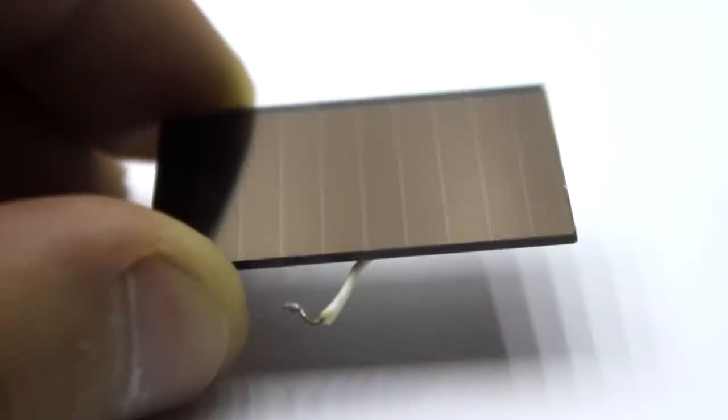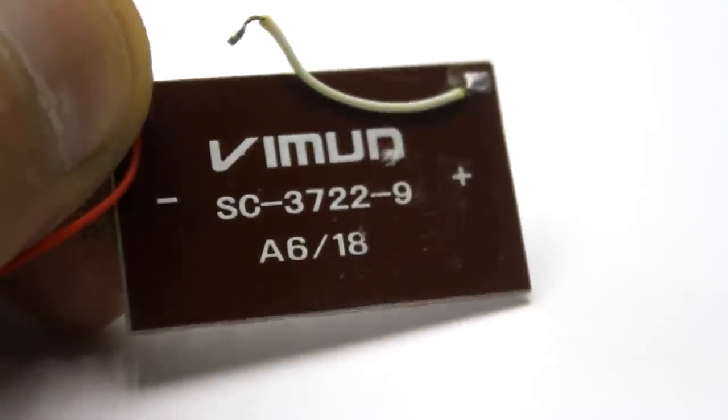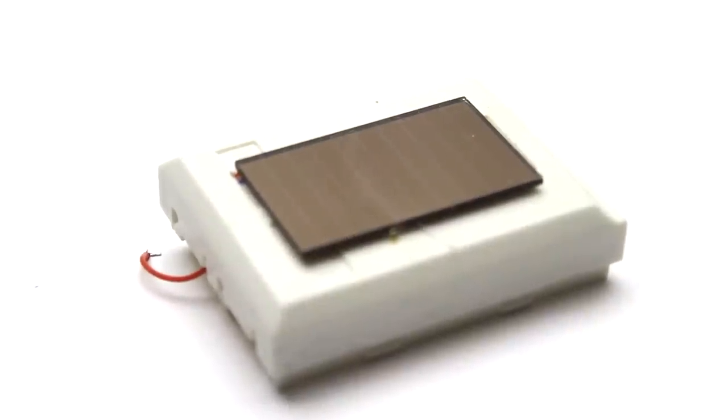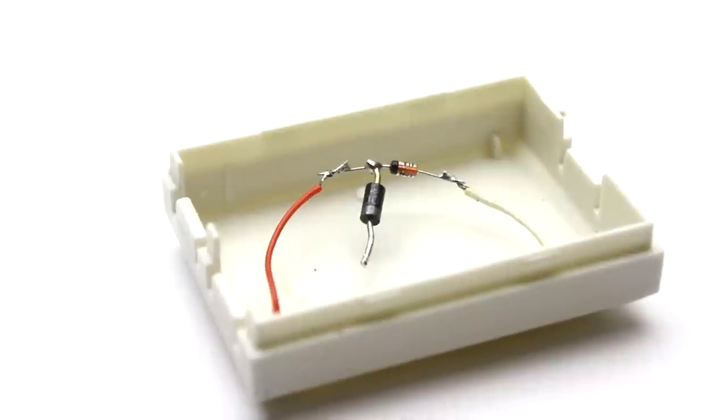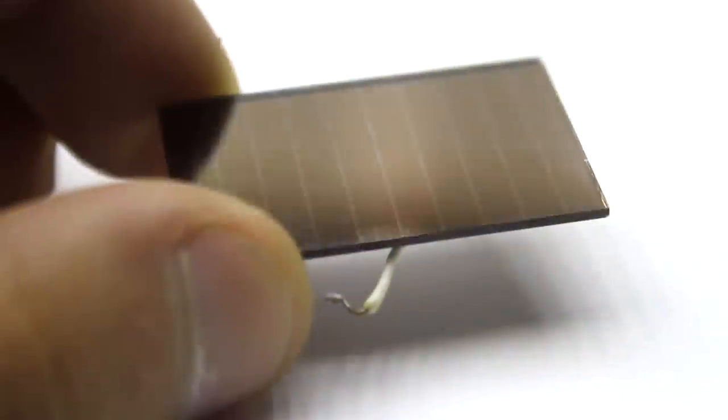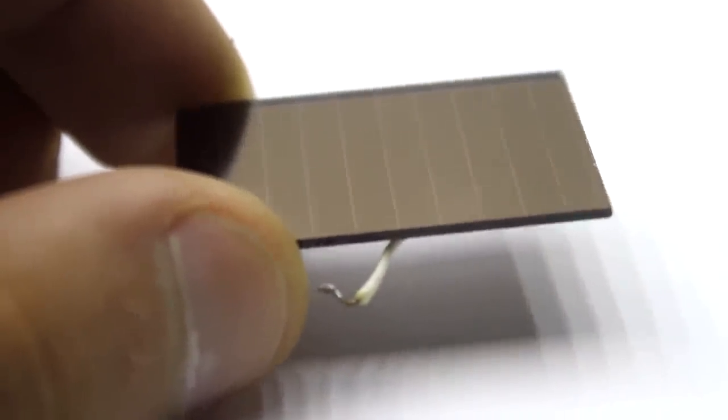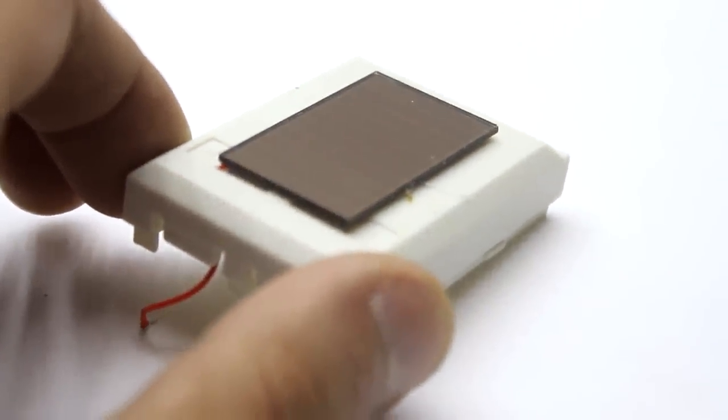The solar module produces 5 volts. The current is negligible, so it is impossible to overcharge and damage accumulator. But anyway, the charge goes through a simple stabilizer circuit and a diode, so that the current from the accumulator couldn't flow in the opposite direction, to the solar module. The battery is fragile and needs to be filled with something transparent, for example resin or a transparent sealant.